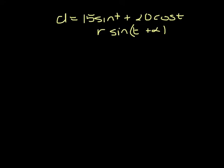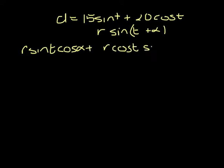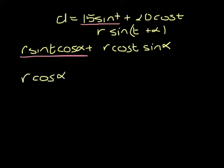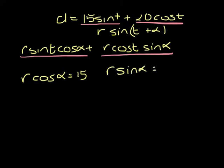I'm going to start by expanding r sin(t + α), and that's sin t cos α plus cos t sin α. I'm now going to look at my coefficients. I have 15 sin t and r sin t cos α, so that tells me that r cos α is 15. We have 20 cos t and r cos t sin α, so that tells me that r sin α is 20.